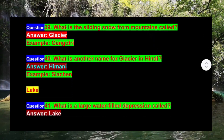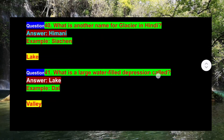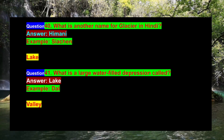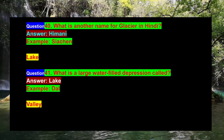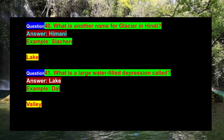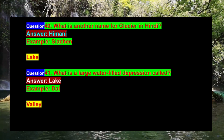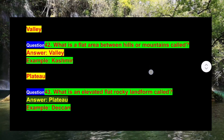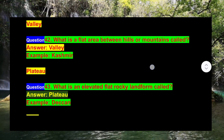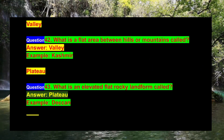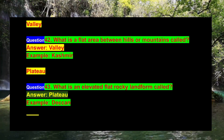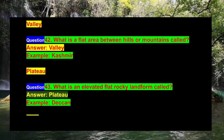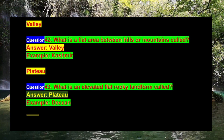Question 40: What is another name for glacier in Hindi? Answer: Himani. Example: Siachen. Question 41: What is a large water-filled depression called? Answer: Lake. Example: Dal. Question 42: What is a flat area between hills or mountains called? Answer: Valley. Example: Kashmir.